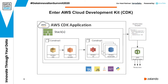However, those templates with time become very large and very hard to manage. So AWS for this reason came up with something called the AWS Cloud Development Kit (CDK). It is a way to express infrastructure using higher-level constructs in popular programming languages like Java, TypeScript, or Python. AWS CDK compiles those into lower-level templates that are then deployed using AWS CloudFormation.